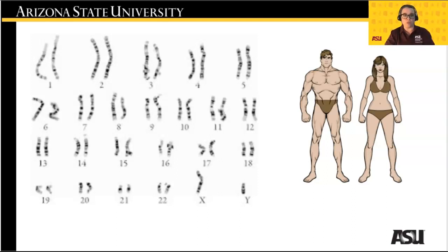The 23rd pair of chromosomes are the sex chromosomes. In humans, the female sex chromosomes are 1X from mom and 1X from dad. In males, the sex chromosomes are 1X from mom and 1Y from dad. These two sex chromosomes lead all the sexually dimorphic traits seen between men and women. Some examples of sexually dimorphic traits include height, weight, facial structure, facial hair, pelvic tilt, and sexual organs.